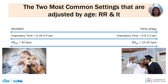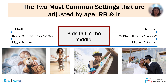Another way to think about inspiratory time and respiratory rate is to consider the two broad ends of the patient spectrum. A neonate would typically start with an inspiratory time of 0.35 to 0.4 seconds and maybe a respiratory rate of up to 40 breaths per minute, while a teenager has settings resembling adult-like parameters. Children fall in the middle — a toddler is closer to neonatal settings, and an 8 or 10-year-old is closer to adolescent-style settings.